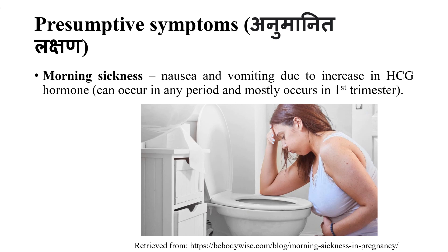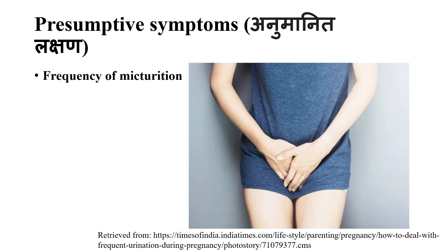Morning sickness can occur at any time of day, not only in the morning. Nausea and vomiting are caused by the HCG hormone — human chorionic gonadotropin — which increases during pregnancy and leads to hormonal changes, resulting in nausea and vomiting. Another symptom is urinary frequency.